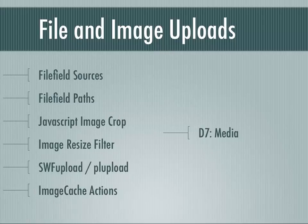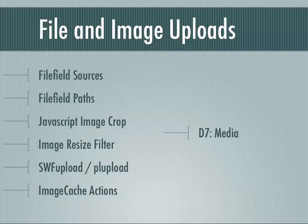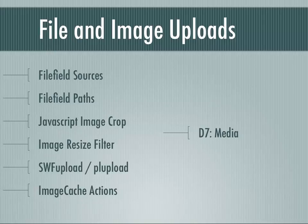File Field Paths lets you tie in to Token Module, and when you're creating a file field, you can tell Drupal where you want that file stored with more granularity. By default, certain things are not provided. So if you want all images for a node to be stored in a path that includes the title of the node or the node ID, that level of granularity is not provided by default. You need File Field Paths to do that.